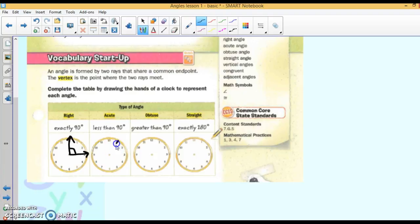An acute angle is less than 90 degrees, so it is smaller than 90. Obtuse is an angle that's greater than 90, and a straight angle is exactly 180 degrees from there to there.